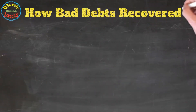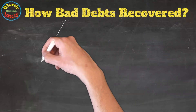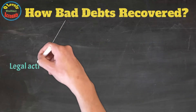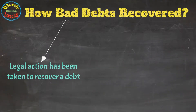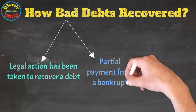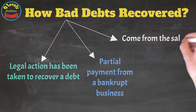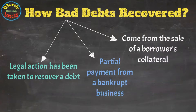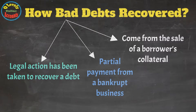There are three ways normally this recovery is gained by the company. First, legal action has been taken to recover the debt. Secondly, partial payment is received by the company from the bankrupt business. And finally, money comes from the sale of the borrower's collateral. Collateral is the guarantee submitted by the borrower at the time of borrowing. Due to his default, the company is liable to recover its money through selling this asset.